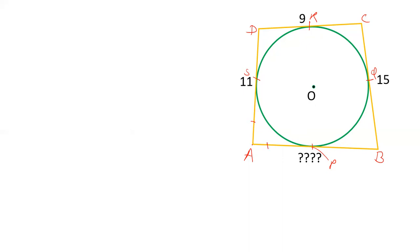So AS equals AP. Similarly, DS equals DR - they are tangents from external point D. Now if I see point C, CR equals CQ. I'm writing CQ here and CR here because I will add the equations, so I need AS on the same side, DR and CR on the same side.